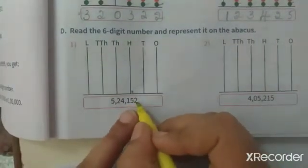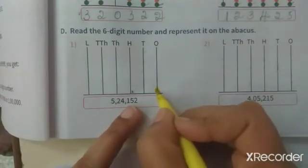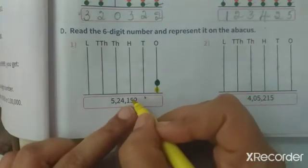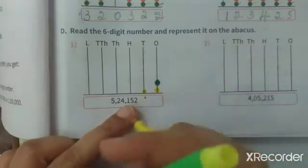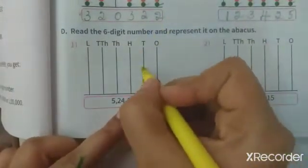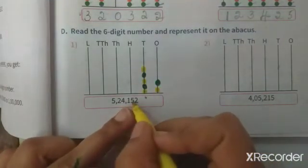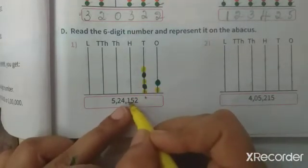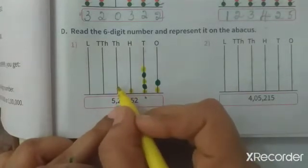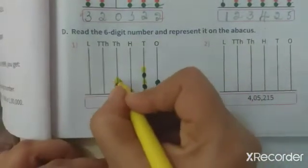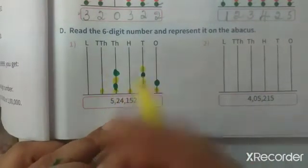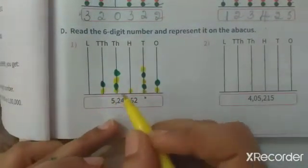In the units or ones place, put two beads: one, two. Then in the tens place — the second digit, five — put five beads: one, two, three, four, five. In the hundreds place, four beads: one, two, three, four. In the ten thousands place, two beads: one, two. Then five again in the lakhs place: one, two.